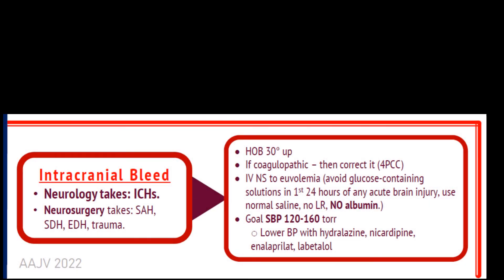About 80 percent of strokes are ischemic and the remaining 20 percent are intracranial bleeds. The most common location and mechanism for intracranial bleed is deep intraparenchymal hemorrhage secondary to chronic hypertension. Intraparenchymal hemorrhages are managed by neurology. When bleeds are outside the brain — such as subarachnoid hemorrhage or subdural hematomas — they are managed by neurosurgery.